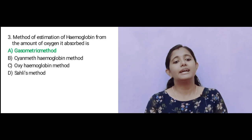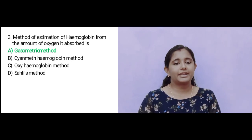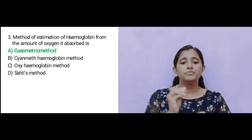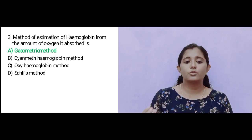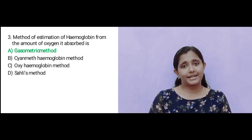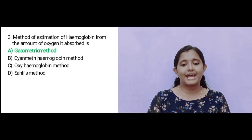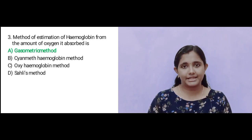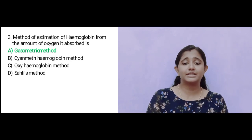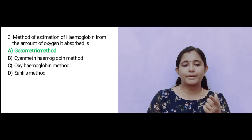The gasometric method estimates hemoglobin by measuring oxygen-carrying capacity — oxygen is absorbed and measured. In the cyanmethemoglobin method, potassium ferricyanide solution converts hemoglobin to methemoglobin, which is then detected. In Sahli's method, hydrochloric acid converts hemoglobin to acid hematin, read using a comparator as a colorimetric method.